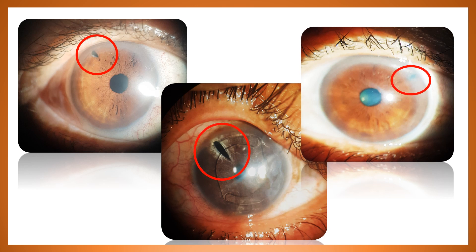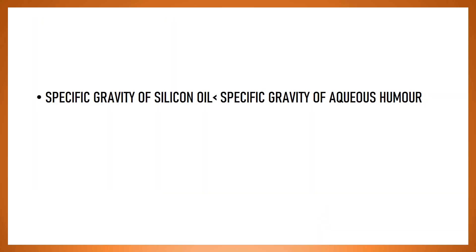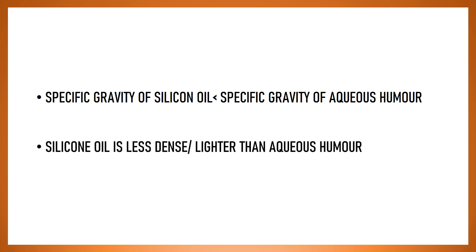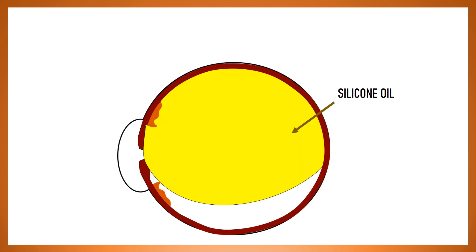An inferior PI is done because the specific gravity of silicon oil is less than that of aqueous humor, which means that silicon oil is less dense. It is lighter than aqueous humor and therefore it would float up. So, this silicon oil could block a superior PI.